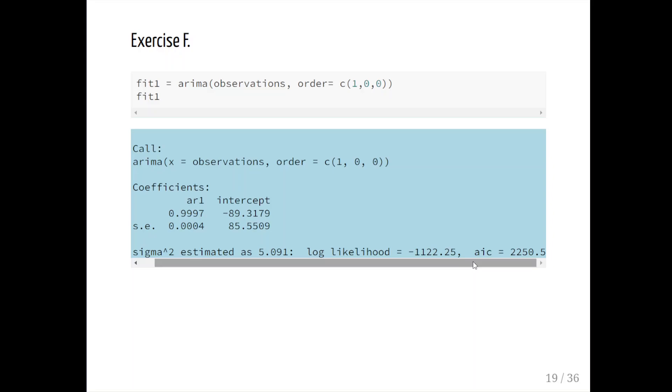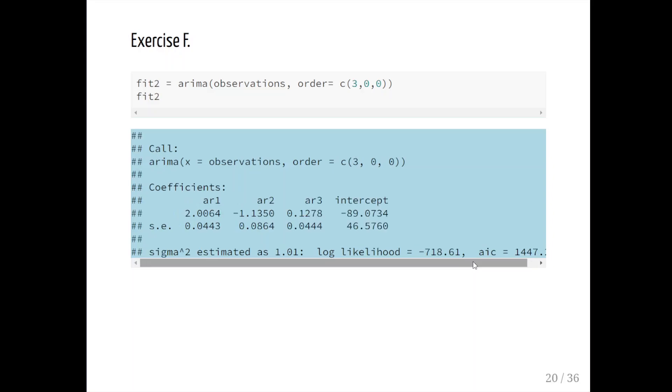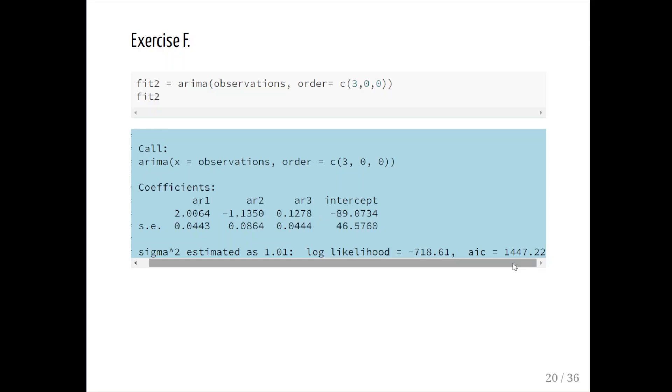Now we're going to fit an AR(3) model. In this case the order equals c(3,0,0) - there's no integration component or moving average component, I equals zero, MA equals zero. This is fit two and we have our AIC down here at the bottom - 1447.22. That's much less than the last case, which means it's a far better model.